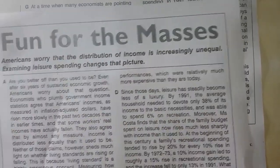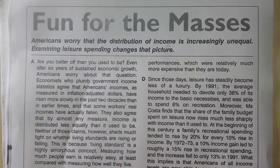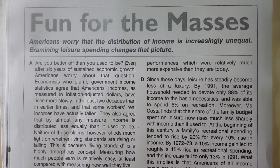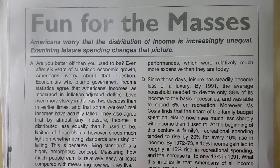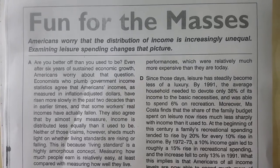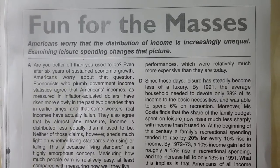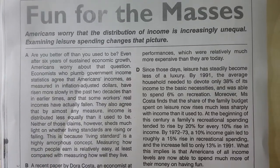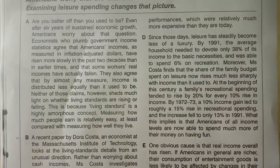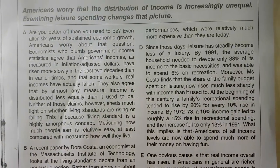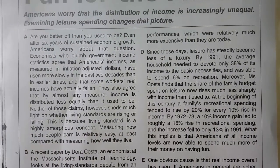Around three minutes are already over. The topic is 'Fun for the Masses.' The line starts with: 'Americans worry that the distribution of income is increasingly unequal; examining leisure spending changes that picture.' So let's go to paragraph A, which states: 'Examining leisure spending changes that picture.'